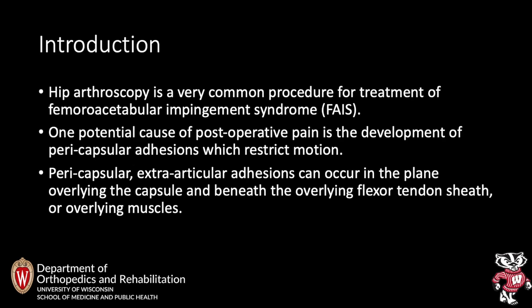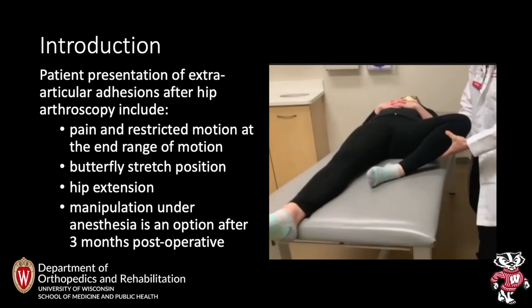Hip arthroscopy is a very common procedure for treatment of femoral acetabular impingement syndrome. One potential cause of postoperative pain is the development of pericapsular adhesions which restrict motion. Pericapsular extraarticular adhesions can occur in the plane overlying the capsule and beneath the overlying flexor tendon sheath or overlying muscles. Patients will often present with pain and a sensation of restricted motion at the end range of motion, particularly in the butterfly stretch position as well as hip extension.